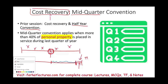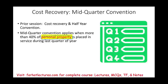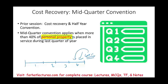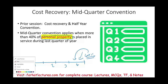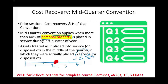So when do we use the mid-quarter convention? It applies only to personal property — not real property like land and buildings. The mid-quarter convention applies when you place 40% of your assets in the fourth quarter. If that happens, you cannot assume you purchased your assets on average mid-year. Instead, you assume that you purchased the asset in the quarter in which you actually purchased it, placed midway throughout that quarter.